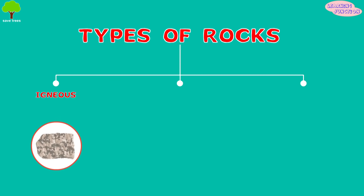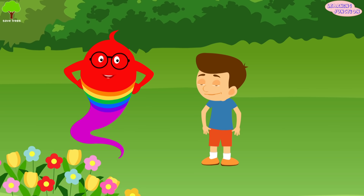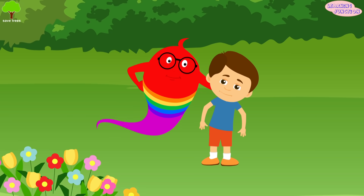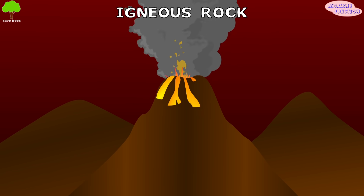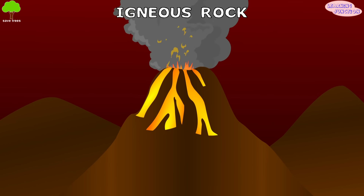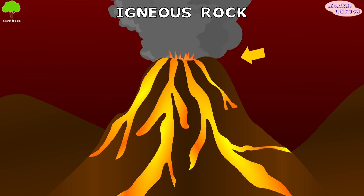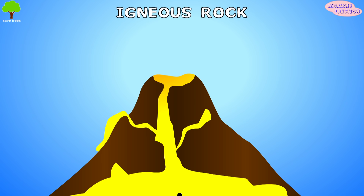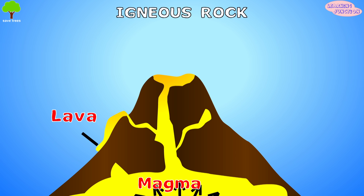They are igneous, sedimentary, and metamorphic. Let's learn about each type one by one. Igneous rocks: Inside the Earth's core, there are a lot of molten materials and metals. They melt because of the temperature inside. The melted material puts too much pressure on the Earth's surface. Sometimes the surface breaks, and due to this, the magma comes out. When it comes out, it's called lava.